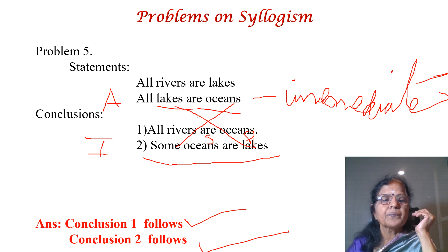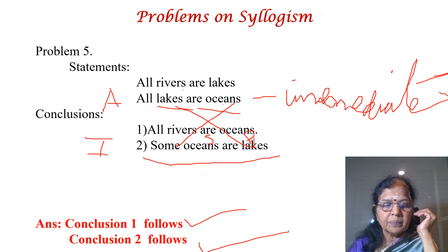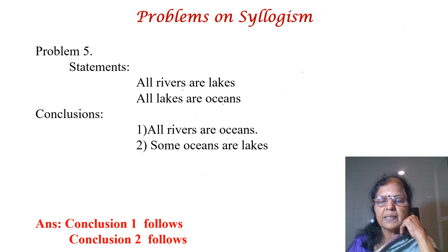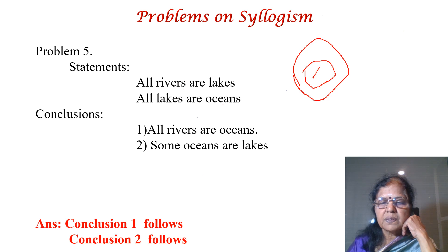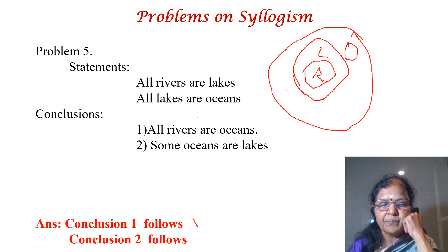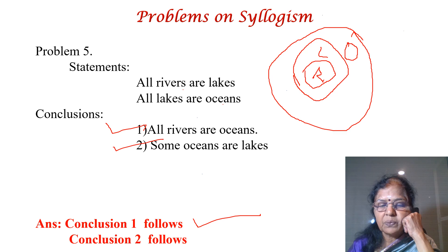Let us check with the Venn diagram. All rivers are lakes — rivers inside lakes circle. All lakes are oceans — lakes inside oceans. All rivers are oceans — yes, rivers are in the big oceans circle. Some oceans are lakes — yes, the lakes-oceans overlapping region confirms this. Both conclusions verified.